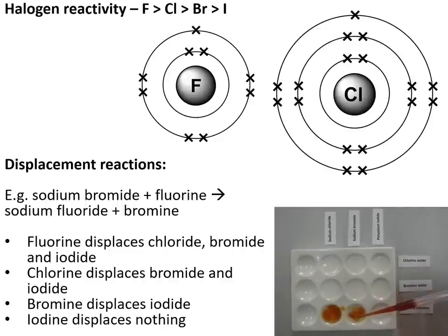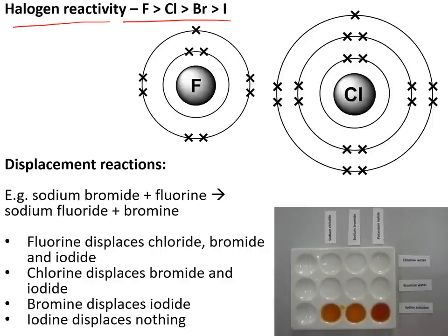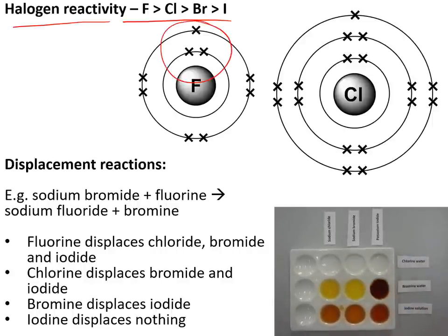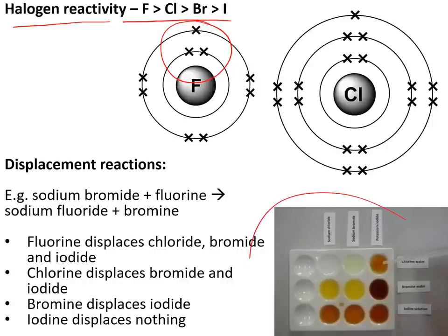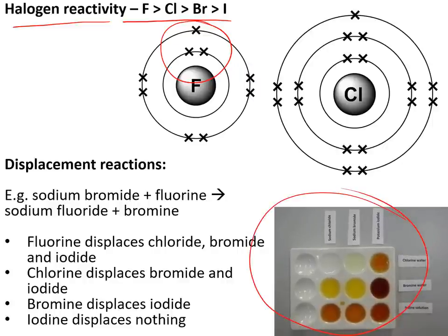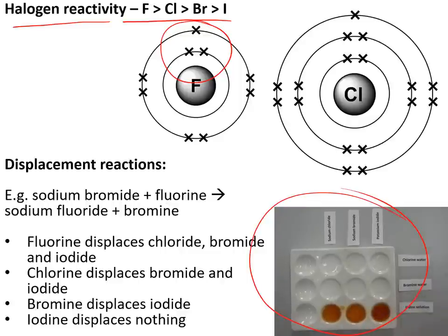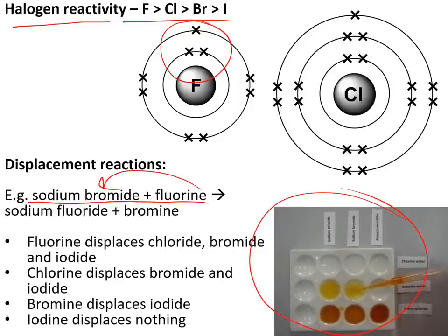The reactivity of halogens decreases down the group because they gain electrons when they react. Halogens near the top of the group have fewer shells of electrons, so those electrons are closer to the nucleus and more strongly attracted, making them more reactive. In displacement reactions, the more reactive halogen can displace the less reactive halide from a salt — for example, fluorine can displace bromine from sodium bromide because fluorine is more reactive, but the reverse would not occur.